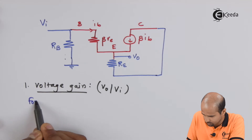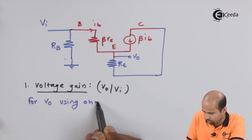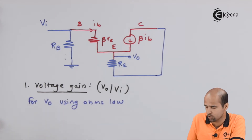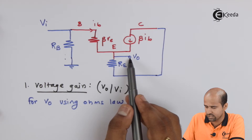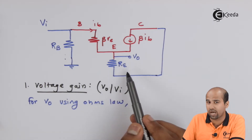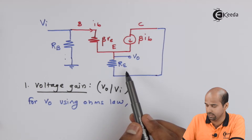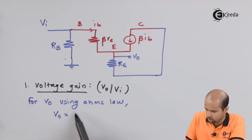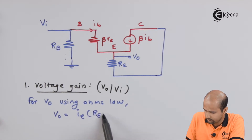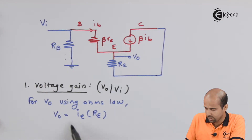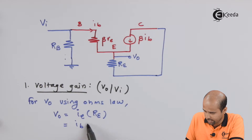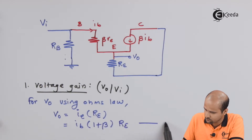Using Ohm's law, VO is equal to the current flowing through RE, which is the emitter current IE. So VO equals IE multiplied by RE. But IE equals (1 + beta) times IB, so VO equals IB multiplied by (1 + beta) times RE. This is equation number 1.